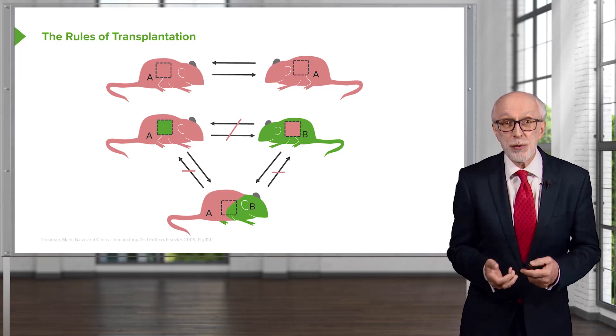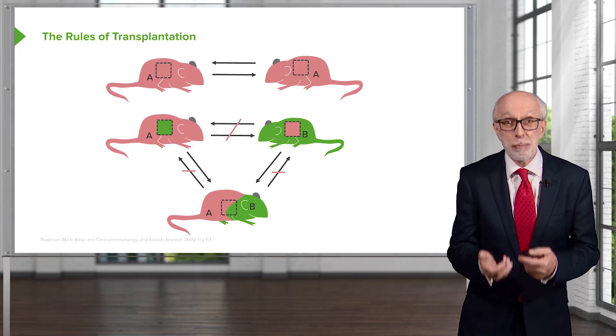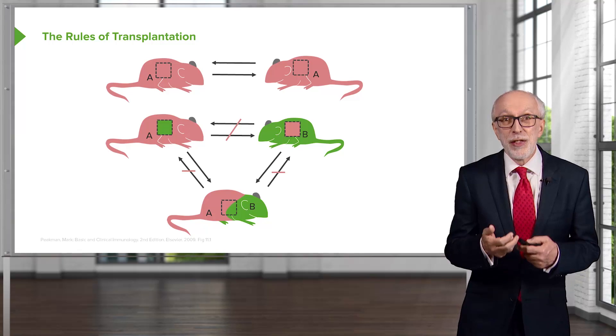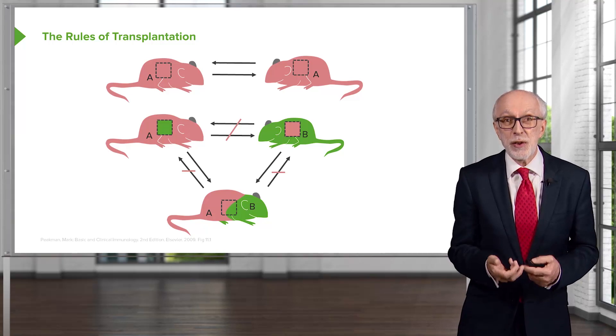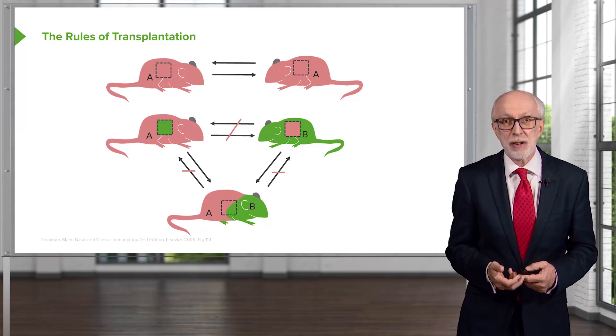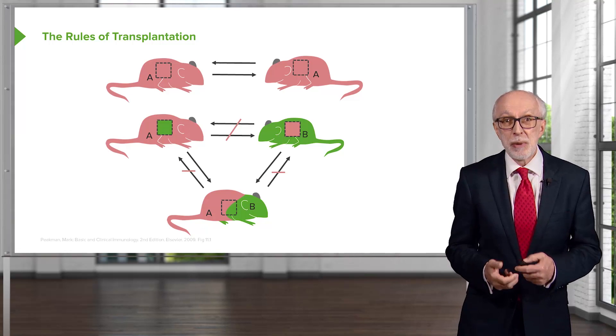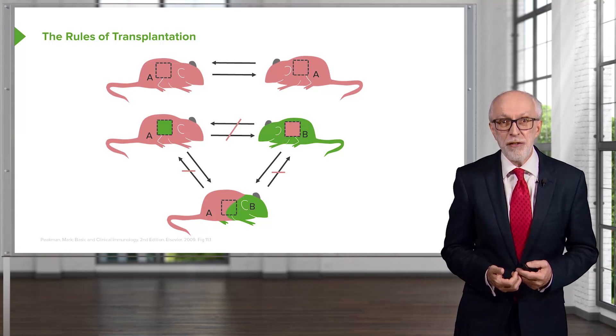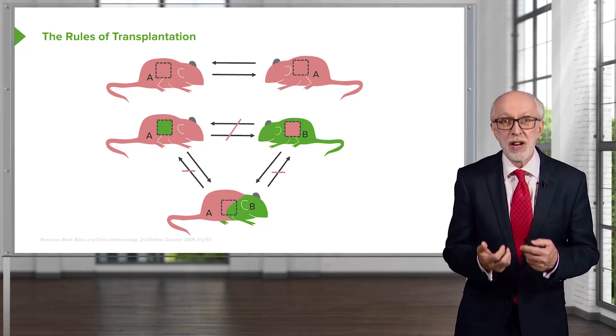But if you took skin from the hybrid mouse, the AB mouse, that would be rejected if transferred either onto an A strain mouse or a B strain mouse, because half the antigens in the F1 hybrid will be foreign to the recipient.